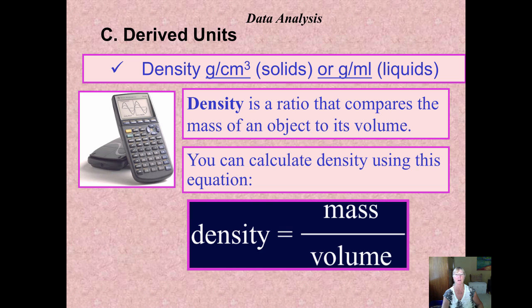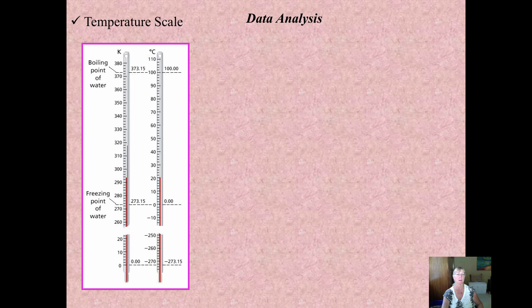In chemistry, that's often grams per milliliter for liquids or grams per cubic centimeter. That's another example of a derived unit.